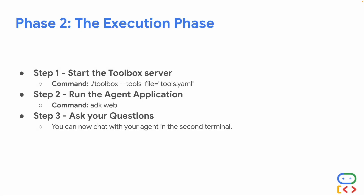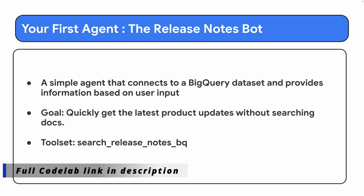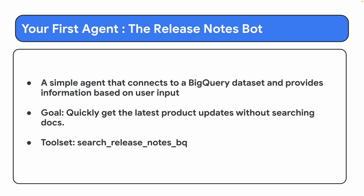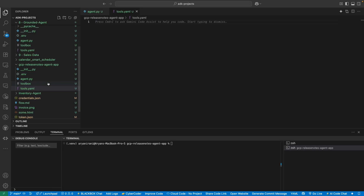Phase two is the execution phase. Step four is starting the toolbox server using the toolbox command. Step five is running the agent application with 'adk web.' Step six is asking your questions and interacting with the agent. The first agent we're building is the Release Notes Bot — a simple agent that connects to a BigQuery dataset and provides information based on user input. The goal is to quickly get the latest product updates without searching the docs.